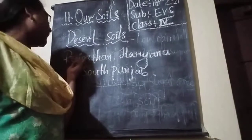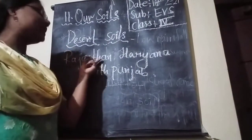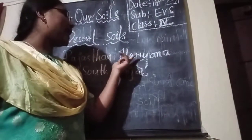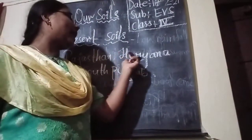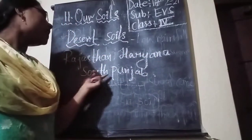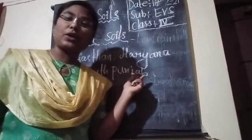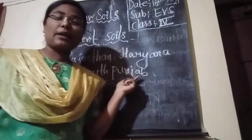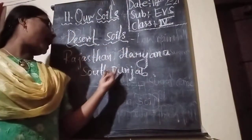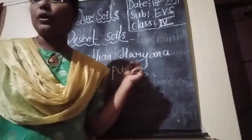The main desert soil regions are Rajasthan, Haryana, and South Punjab. Rajasthan — H-A-R-Y-A-N-A — Haryana, South Punjab — S-O-U-T-H Punjab. These three regions: Rajasthan, Haryana, South Punjab.